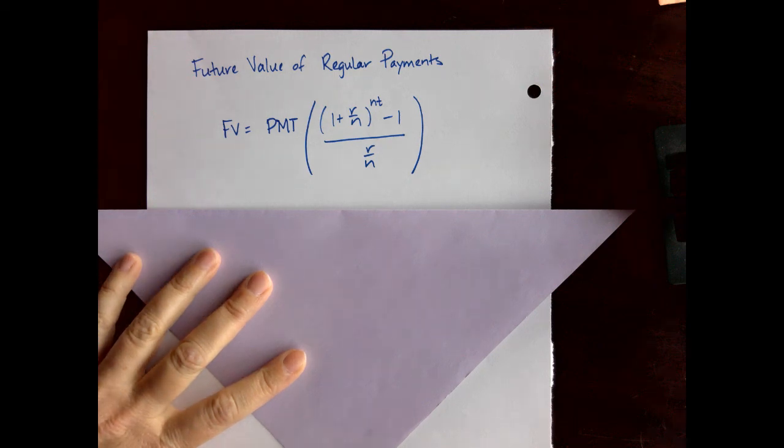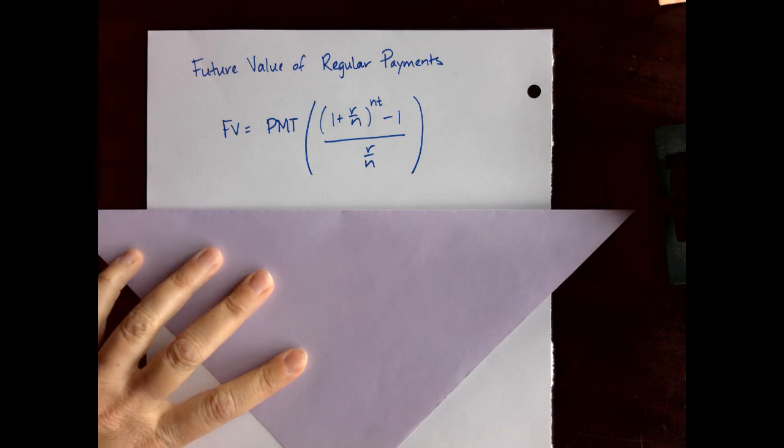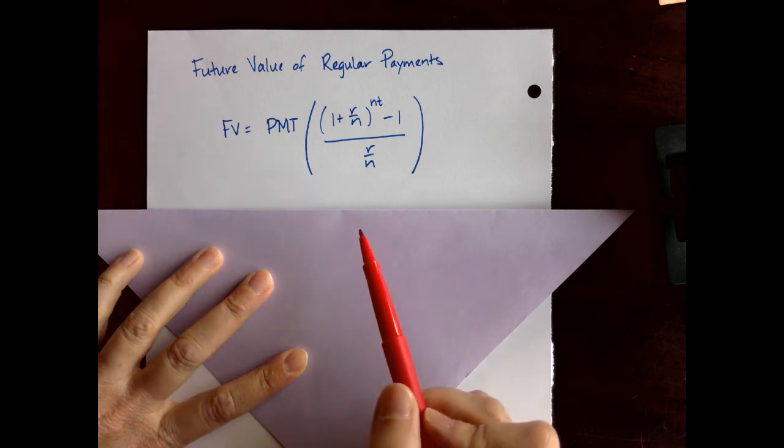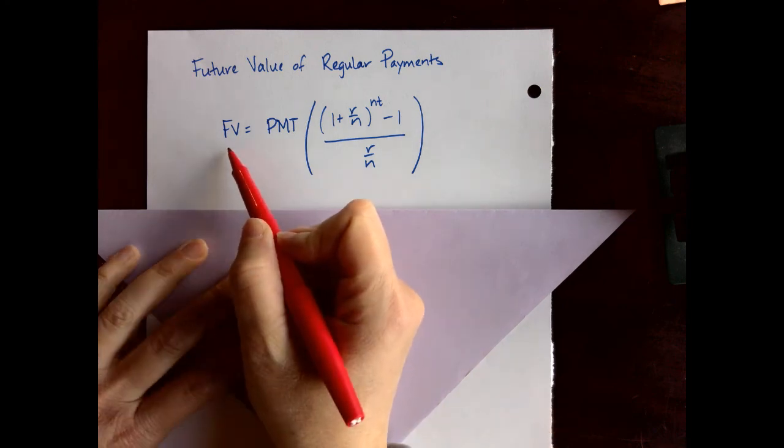Let's find the future value of regular payments into an account. Let's pretend that a person wants to put a fixed amount in an account at a fixed rate over many years and they want to do that monthly. They're not going to take any money out until the end of the scenario and they're not going to change their payment amount over time. So to find out the future value of all of that work, we have a formula for that and we'll use FV for future value.